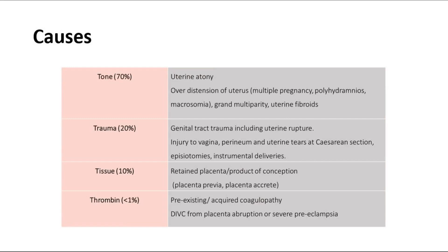Tone is the most common cause of postpartum hemorrhage, accounting for 70% of all cases, and is due to uterine atony. This occurs in cases such as over-distension of the uterus — for example, multiple pregnancy, polyhydramnios, or macrosomic baby — grand multiparity, and also the presence of uterine fibroids.